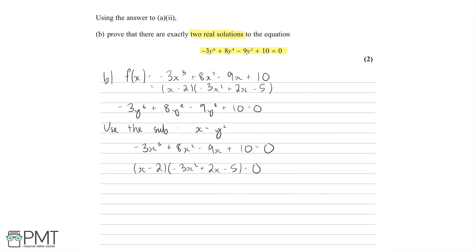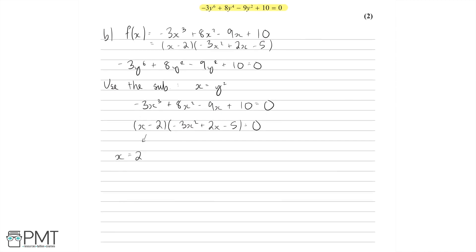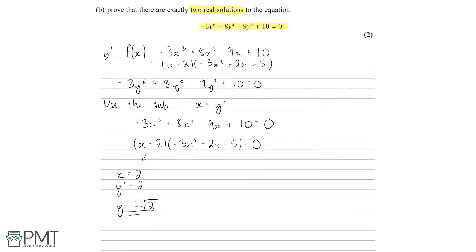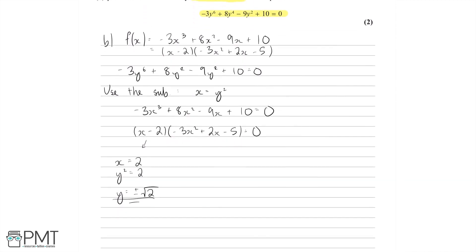One solution is x equals 2. Since x equals y squared, y squared equals 2, so y equals plus or minus root 2 for this part. But we also need to show those are the only two real solutions. We need to show that the quadratic minus 3x squared plus 2x minus 5 has no real solutions, by showing the discriminant b squared minus 4ac is less than 0.